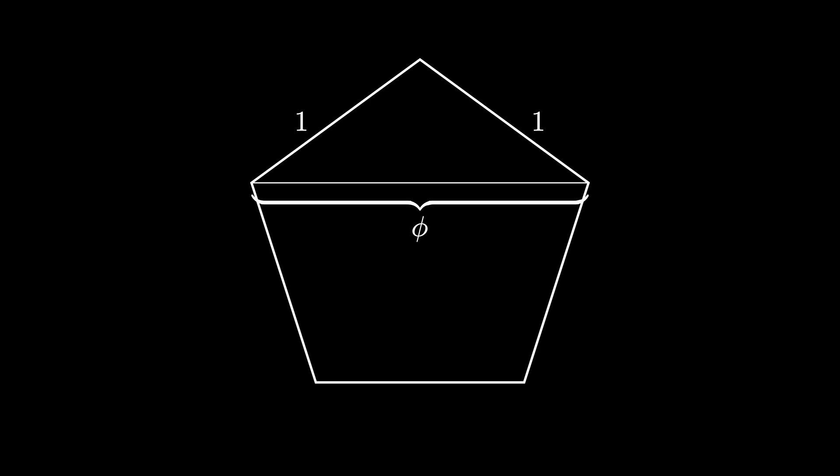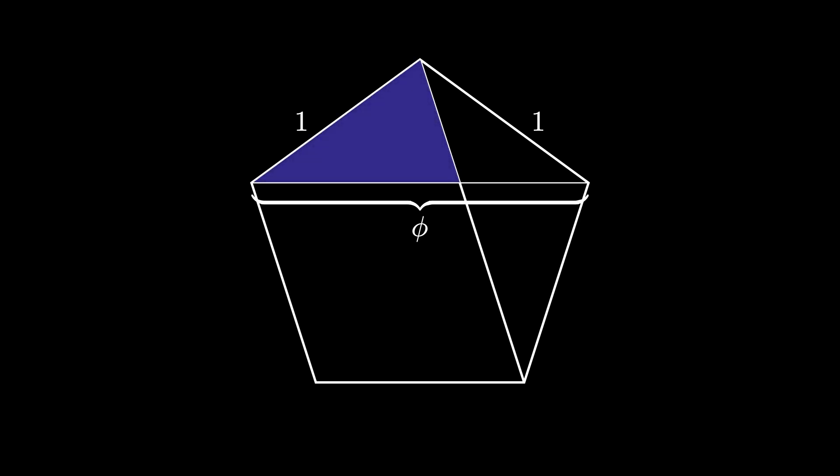Another well known fact about the regular pentagon is that this diagonal shown here, along with the original diagonal drawn, creates an isosceles triangle as pictured here, which has sides of length 1 and a base of length 1 divided by the golden ratio.